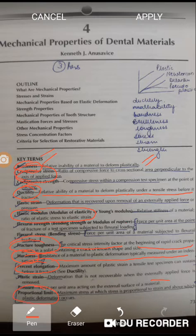Proportional limit is the maximum stress at which the stress is directly proportional to the strain, and above which plastic deformation occurs. So these are a few of the important terminologies.